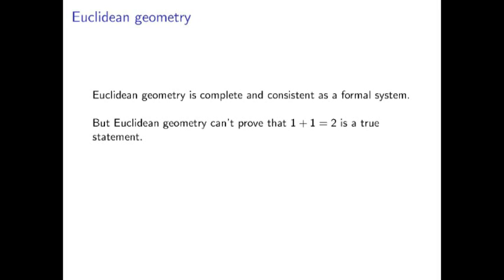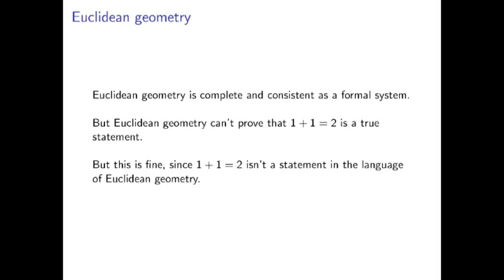Even though one plus one equals two is a true statement, with the common definitions of the words, there is no way for this system to prove it. This isn't a contradiction to completeness, though, because one plus one equals two can't even be expressed in the language of Euclidean geometry, which, again, only talks about things like points and lines and angles.